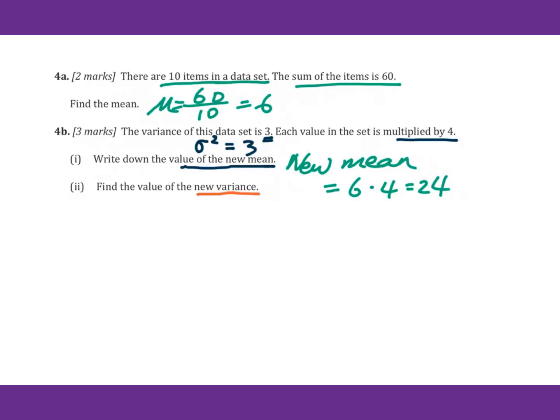Find the value of new variance. For the new variance, this is the formula. Since this xi will multiply by 4, the mean will multiply by 4. So you will get 16, because this is 4 squared times the original sigma squared. That is 16 times 3 equals 48.